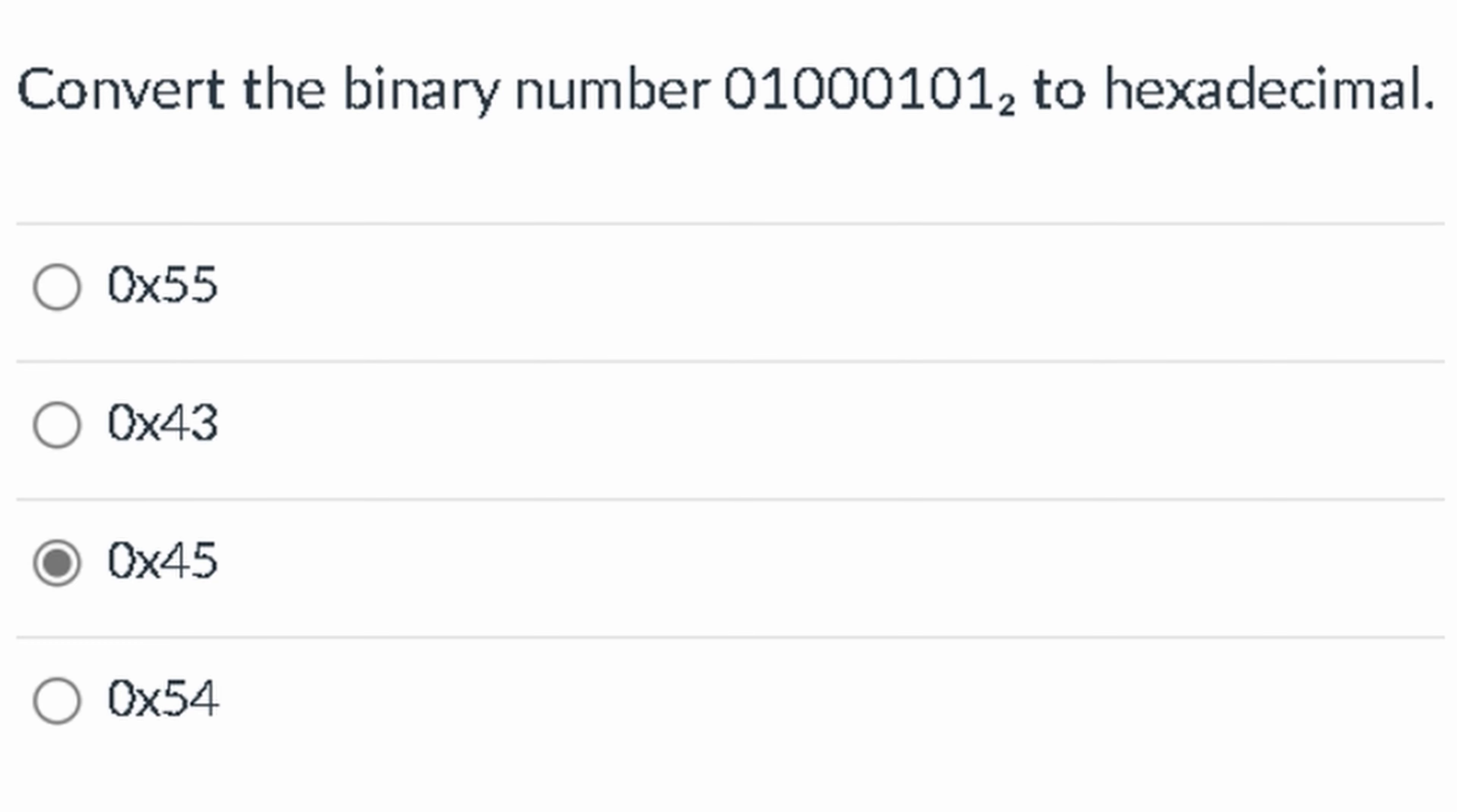When we do something like this, we're going to want to break this up. There's 8 total here. We're going to break it up into 4 and 4. So we have 0, 1, 0, 0, and then we have 0, 1, 0, 1.